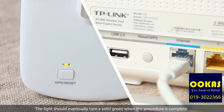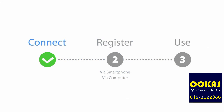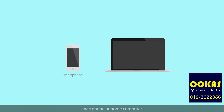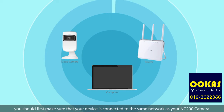The light should eventually turn a solid green when the procedure is complete, meaning that the devices are matched. Whatever device you are using — smartphone or home computer — you should first make sure that your device is connected to the same network as your NC200 camera.